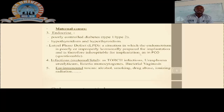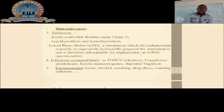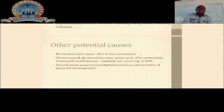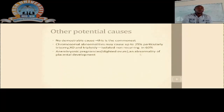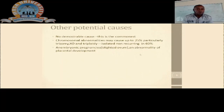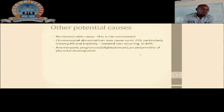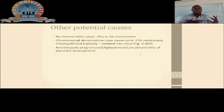In addition to endocrine and infectious causes, we may also talk about environmental factors surrounding the pregnant woman — alcohol consumption, smoking, drug abuse, and ionizing radiation. Beyond these fetal and maternal causes, there are also other potential causes. The most common among these is an anembryonic pregnancy, also called a blighted ovum. We will explain this nicely when we talk about the types of abortions.